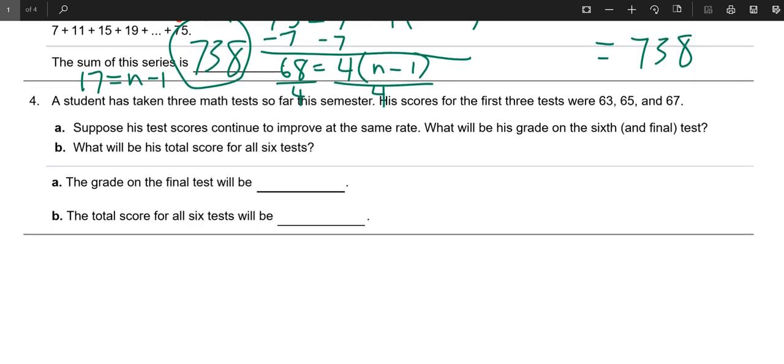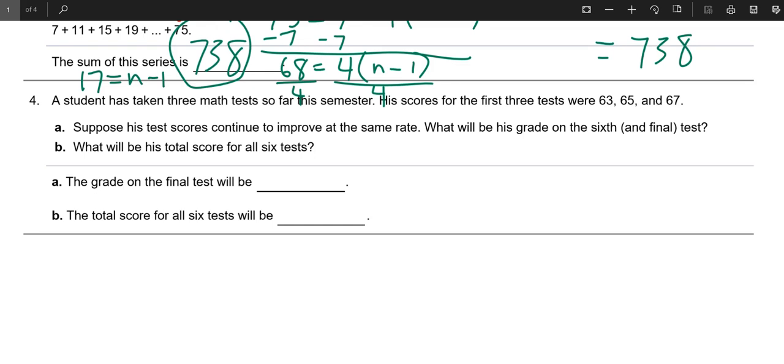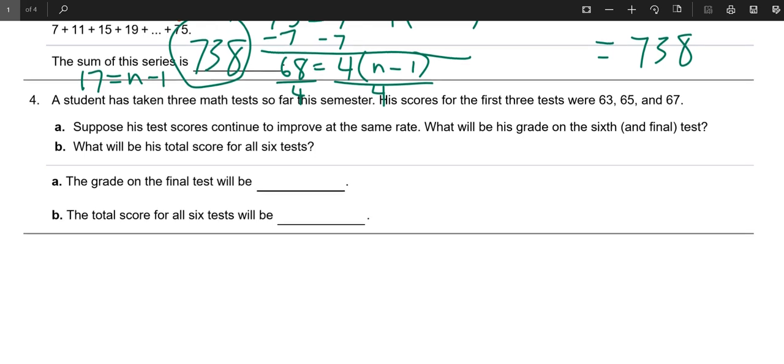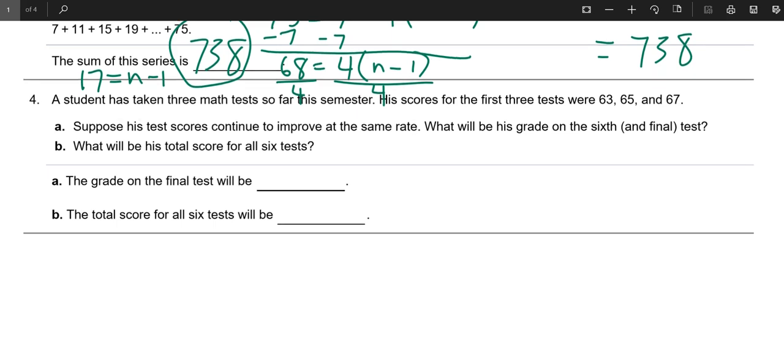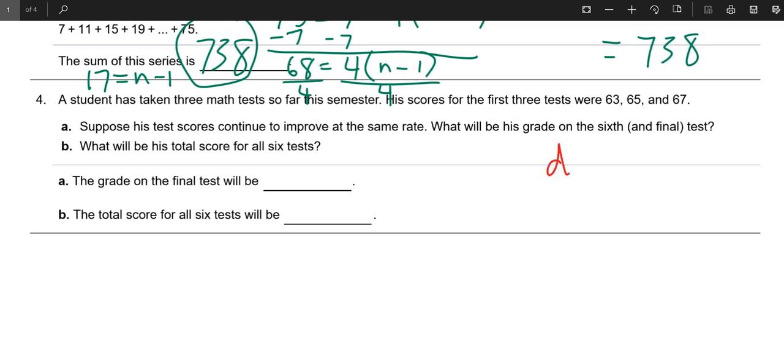Okay, so suppose a student has taken three math tests so far. His scores for the first three tests were 63, 65, and 67. Suppose that his test scores continue to improve at the same rate. We've got a common difference of two. Alright, so let's mark that down. Okay, so we do know that there are going to be a total of six tests, so that will help me find this one right here, the sum of six tests.